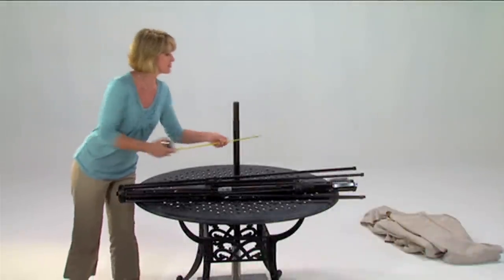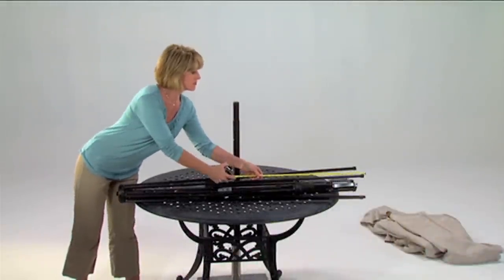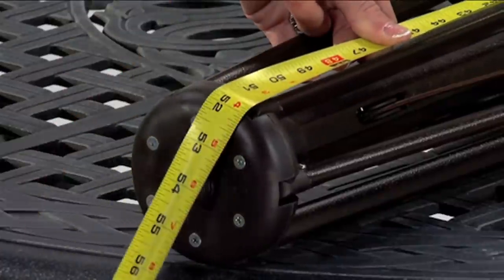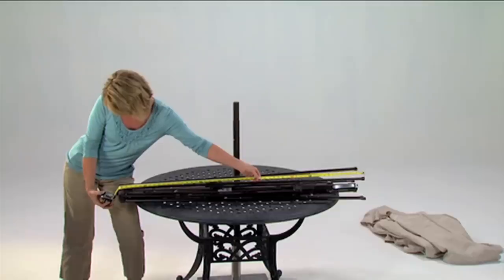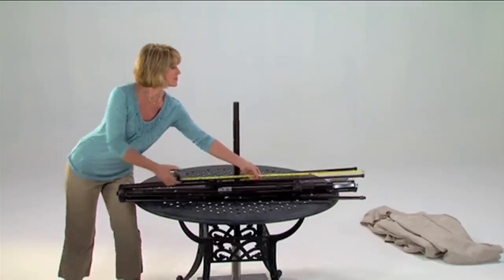Finally, hold your tape measure to the end of one rib and run it all the way up to the top dead center of your umbrella's frame. This is typically the point where the finial cap inserts into the frame.